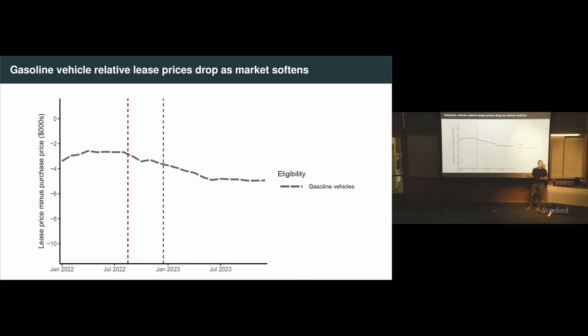So this sits at about negative $3,000 or $4,000. This is looking over a period from January 22, IRA's passed here in August of 22, and looking through the end of last year. So the market softens in late 22. I don't know if anybody tried to buy a car in 2022. I did, actually. You basically couldn't find a car here. But by 23, interest rates are higher, demand is softening, and so the whole market is softening.